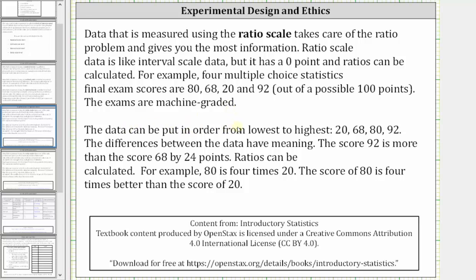The data can be put in order from lowest to highest. The differences between the data have meaning. The score of 92 is more than the score of 68 by 24 points, and ratios can be calculated. For example, 80 is four times 20, and therefore the score of 80 is four times better than the score of 20.